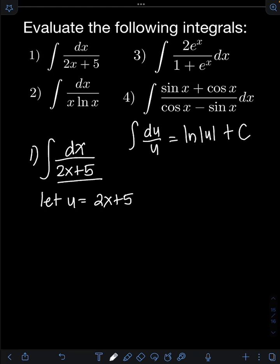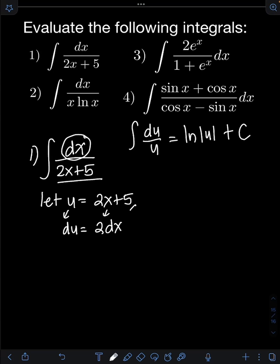Then get the derivative of both sides. The derivative of u is du. The derivative of 2x plus 5: the derivative of 2x is 2, plus the derivative of 5 is 0, so that's just equal to 2. Don't forget the dx. We have the term dx in the original integral, but we have an extra coefficient of 2 which we don't need, so we get rid of that by dividing both sides by 2.